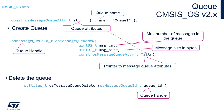Creating a queue is similar to creating tasks but simpler. We specify the queue name — in this case q1 — and then execute the function osMessageQueueNew with three arguments: the maximum number of messages in the queue, the message size in bytes, and a pointer to the attributes structure containing the name. The return value is a queue handle of type osMessageQueueId_t. If null is returned, there is a problem with creation, most likely a memory allocation issue.